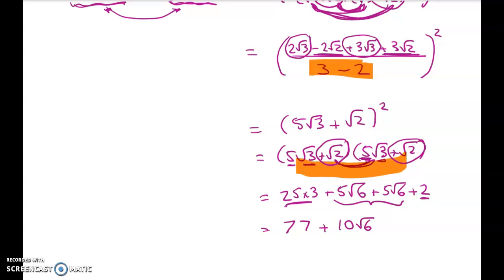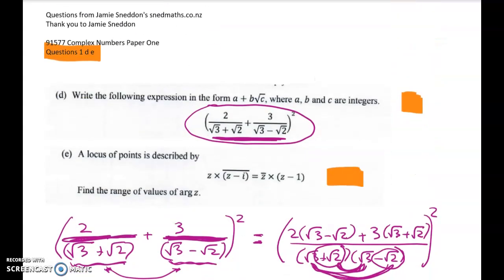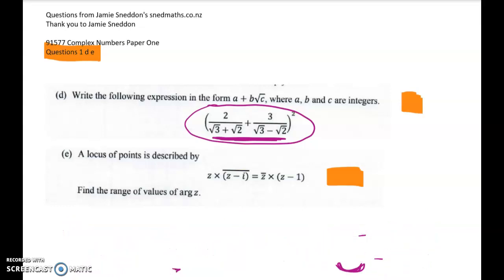Now onto the longer one, which is the locus question. So when we work with a locus question, sometimes we can see a geometric thing straight away. As I've said before, I think on both my Saturday sessions and in my normal classes at school, when you're doing NCEA level 3, you need to be careful to work algebraically. So in this case, we're going to work algebraically because I can't immediately see what's going on here.